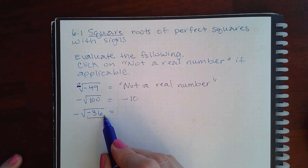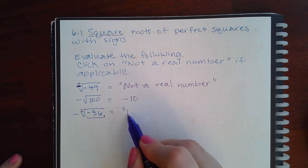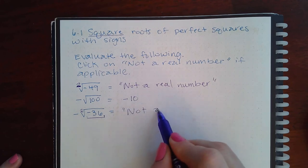Now here again we have the same problem. We have a negative radicand and an even index, which means the response here is going to be not a real number.